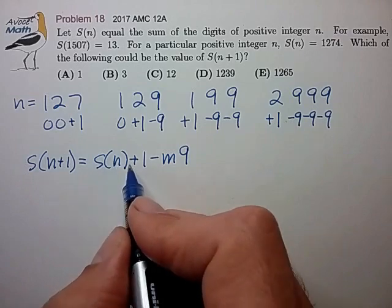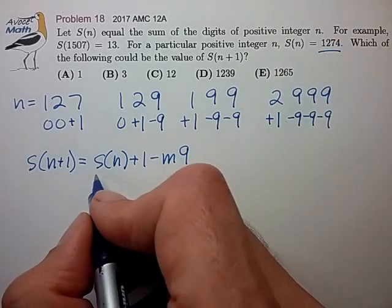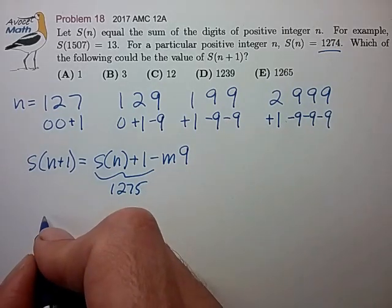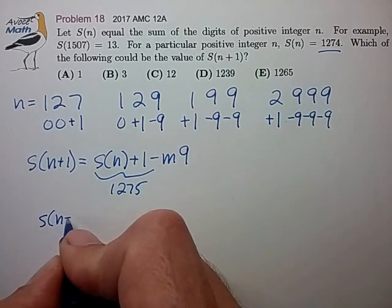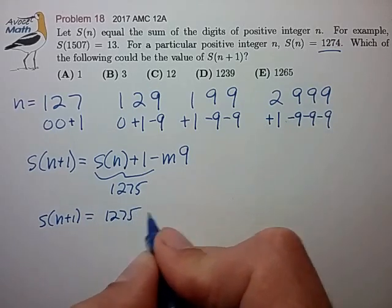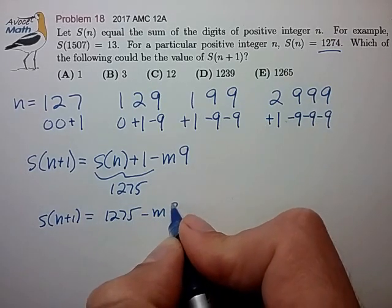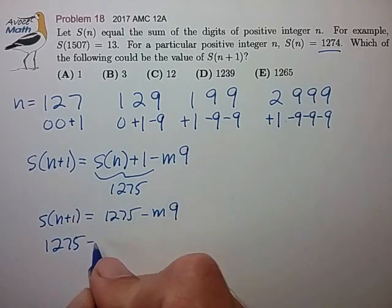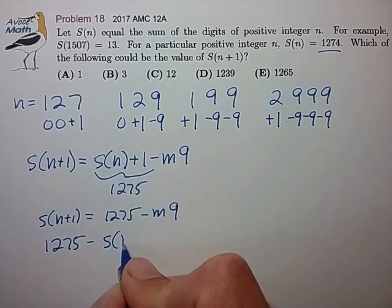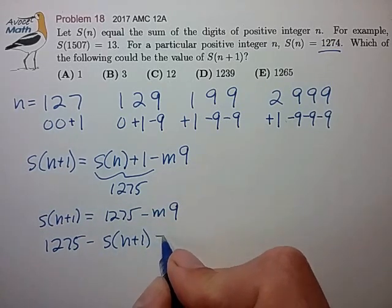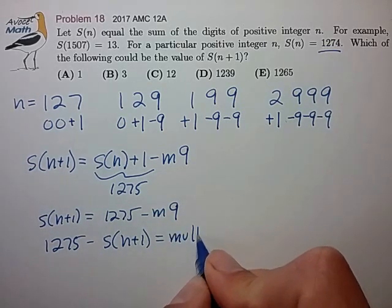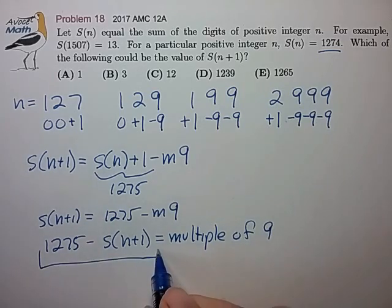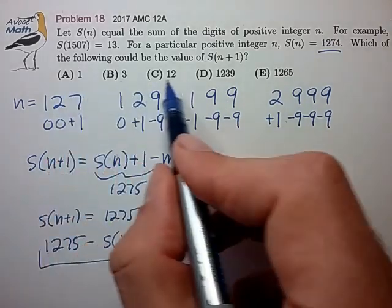So this looks like the key for solving this problem, because we know that S(n+1) is just 1275. So S(n+1) is 1275 minus m times 9, a multiple of 9. So 1275 minus S(n+1) still has to be a multiple of 9. This is the test condition to check the possible answer choices.